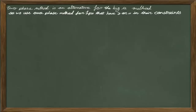In the Big M method, we learned how we use excess and artificial variables to standardize the constraints with greater-than-or-equal or equal signs. If you are not familiar with the concept of excess and artificial variables, please stop this lesson, go back to the Big M method lesson, learn those concepts, and then come back to this video.